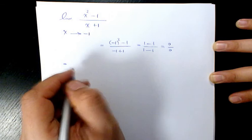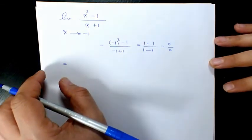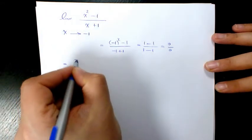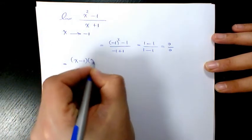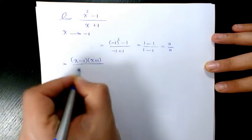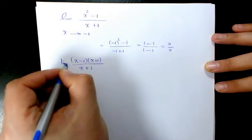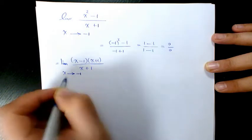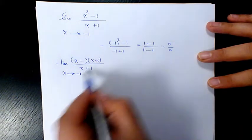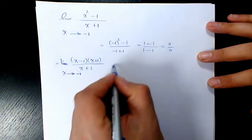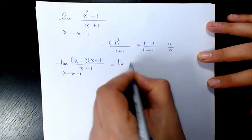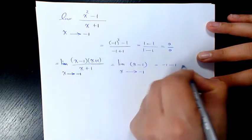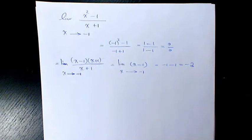In this example we have x squared minus 1, which we can factor to (x minus 1)(x plus 1) over (x plus 1). As you see, these two cancel out and it's going to be x minus 1. When x approaches negative 1, it's going to be negative 1 minus 1, which equals negative 2.